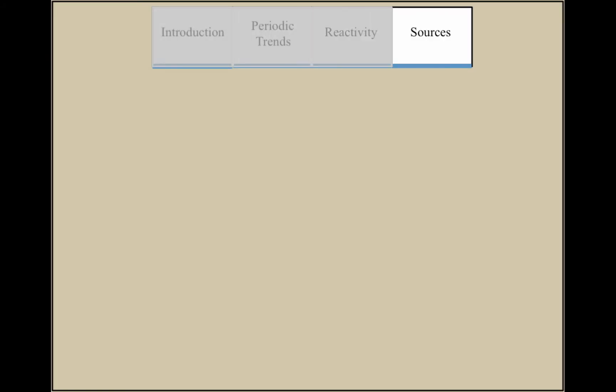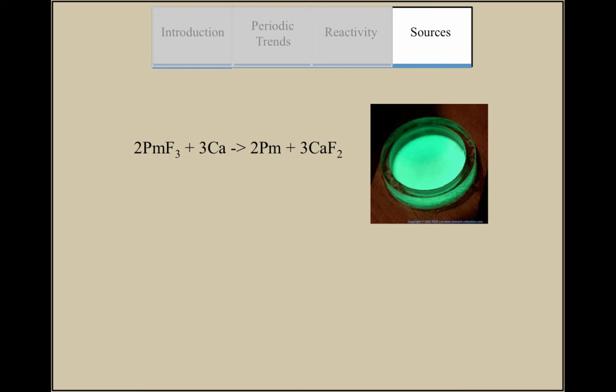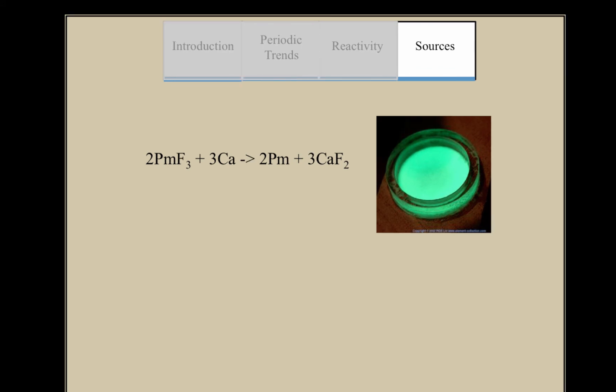Usually, it isn't found in its pure form. However, it can be produced through the reduction of Prometheum Fluoride III combined with calcium metal.